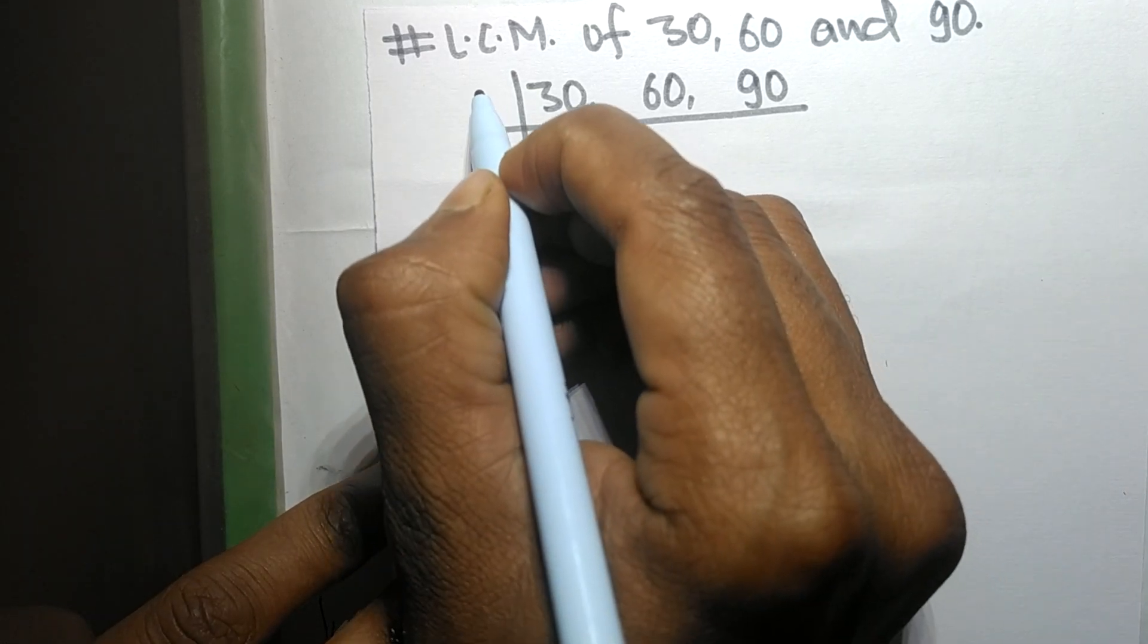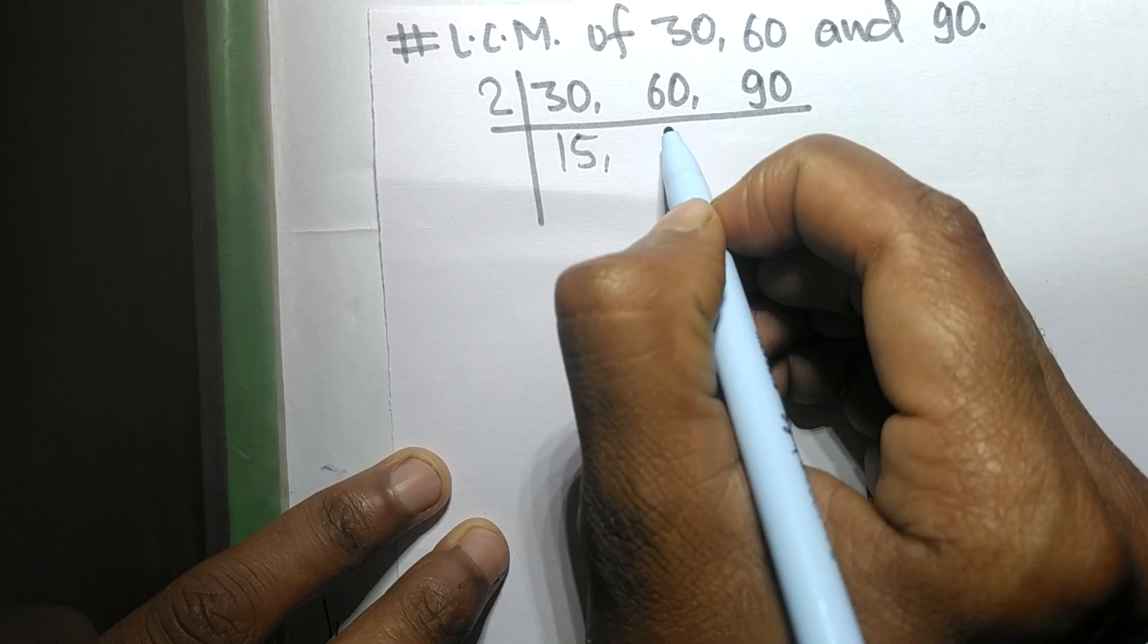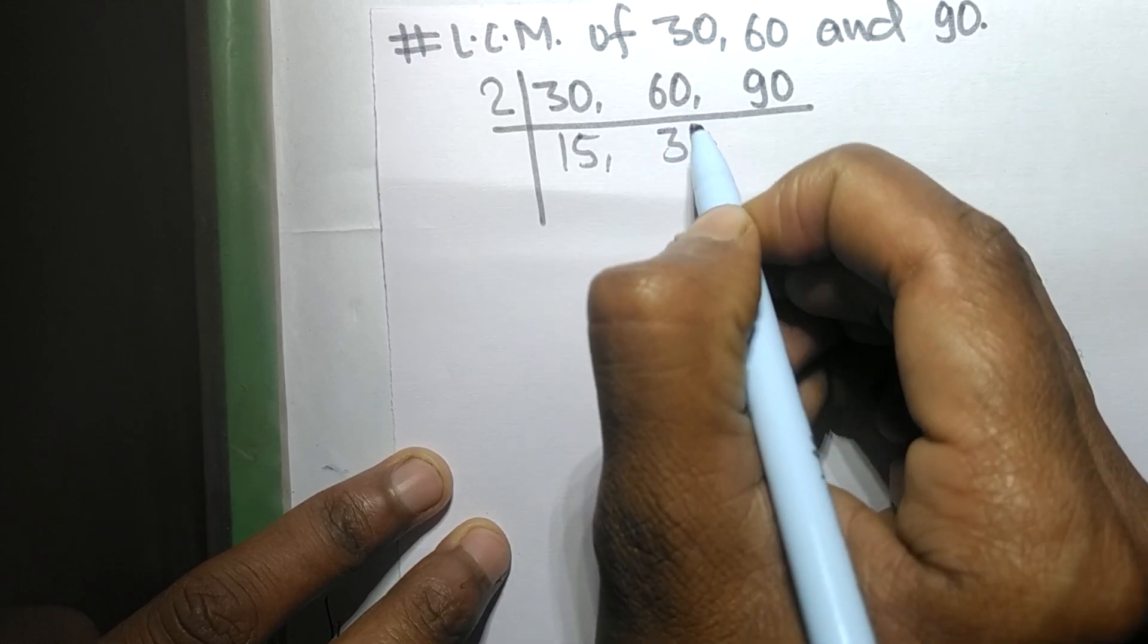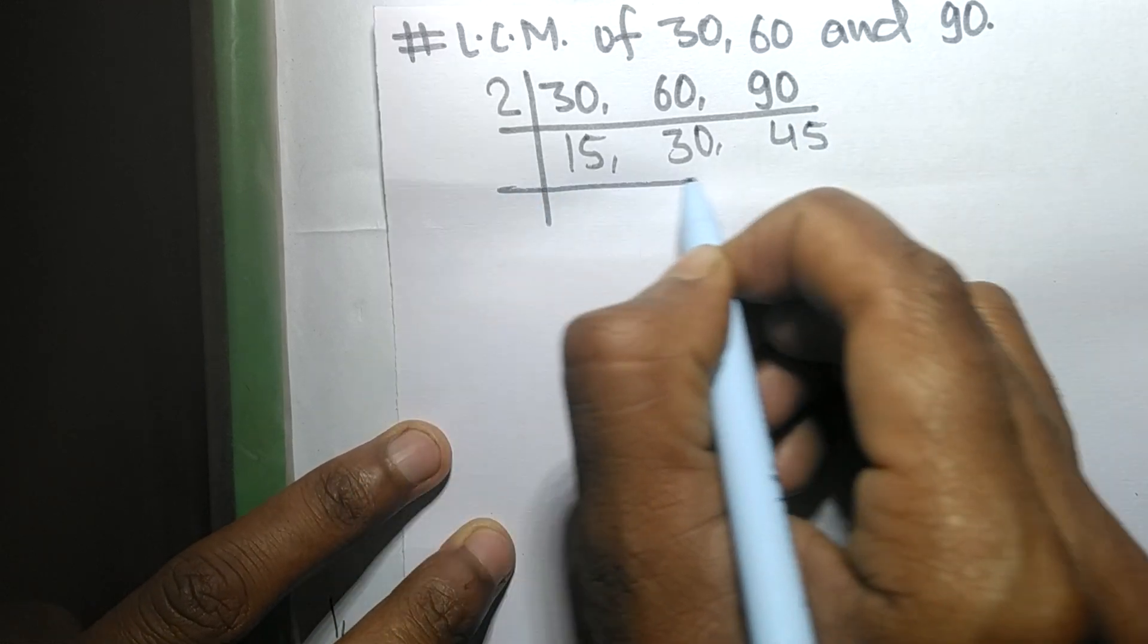divisible by 2. So 2 times 15 means 30, 2 times 30 means 60, 2 times 45 means 90.